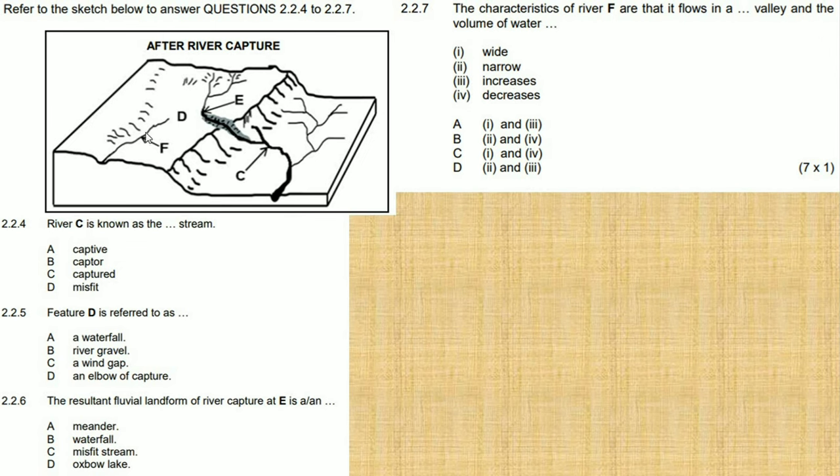Like I said, less water will be flowing inside river F. So let's see, the option there is wide and decreases, which is one in four. So one in four, meaning your answer is C.